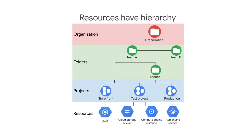Cloud Identity and Access Management, also called IAM, lets you fine-tune access control to all the GCP resources you use. You define IAM policies that control user access to resources.